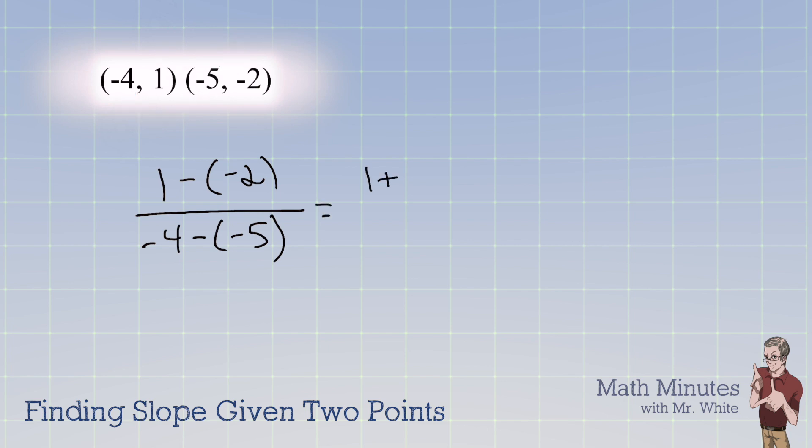So 1 plus 2 over negative 4 plus 5 gives me the answer 3 over 1. Now, the slope could be written as 3 over 1, right? Because you're going to go up 3 to the right 1 if you were to graph this. We could also shorten it to just be a slope of 3. That's perfectly fine also.